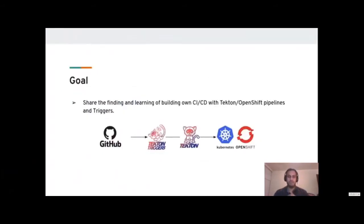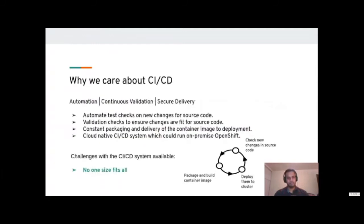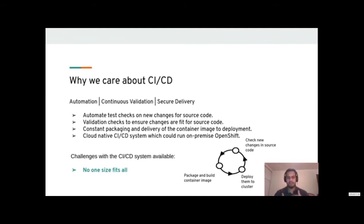The goal for this talk was to share my findings and learnings when I started to build this CI/CD tool with Tekton pipelines and triggers. Before going into the design and implementation, let me ask: why do we care about CI/CD? CI/CD is a very integral part of the DevOps lifecycle. When a developer or contributor contributes to source code and makes new changes, they send those changes for review. The reviewer doesn't have to ensure syntax styling, linting, or pytest checks — the continuous integration system takes care of that.